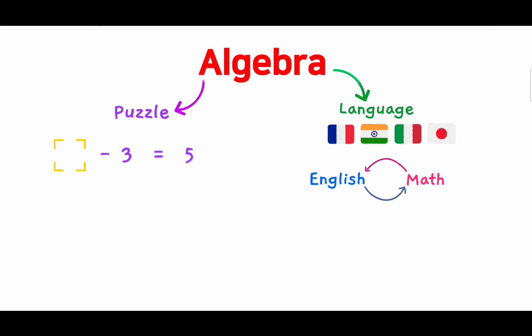Let's start with a puzzle. What is the missing number here? The answer is 8, right? Because 8 minus 3 equals 5. Easy stuff.